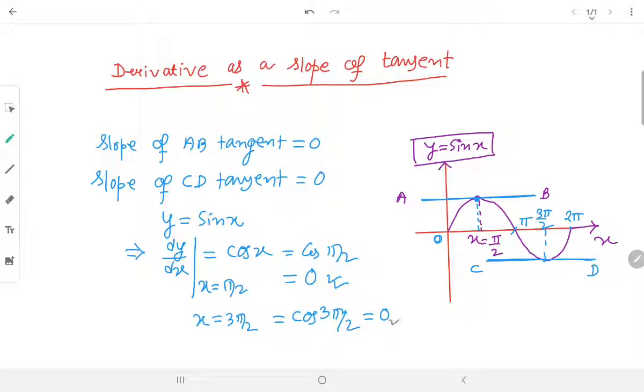Hence, in both the case, derivatives are 0 and the slope of the tangent is also 0. Therefore, we can say that derivative is equals to the slope of the tangent.